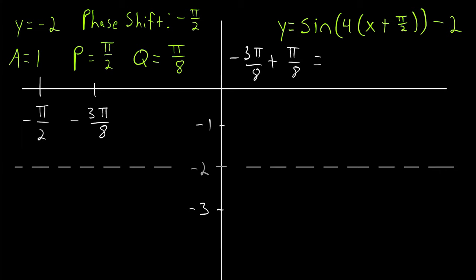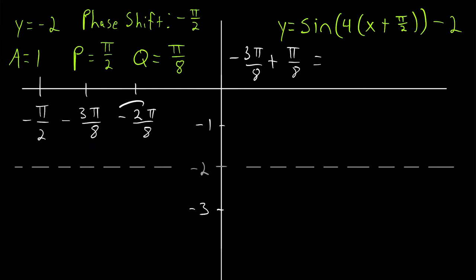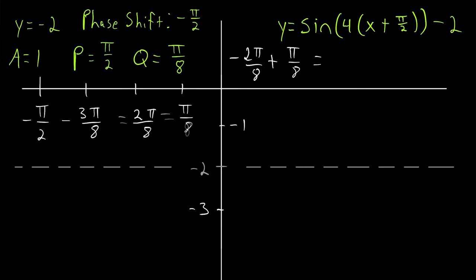To find the x-coordinate of each next key point, we add a quarter period pi over 8 each time. From negative pi over 2, that's negative 4 pi over 8 plus pi over 8 equals negative 3 pi over 8. Then adding pi over 8 gives negative 2 pi over 8, then negative pi over 8, then 0 — the end of our period. I keep fractions unreduced until the end since it makes adding quarter periods easier.